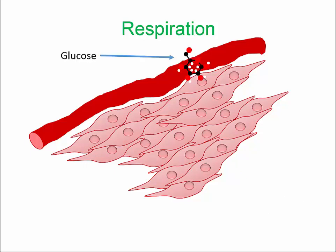Muscle cells require a lot of energy in the form of glucose. Glucose travels around the body in blood vessels and can be taken up by muscle cells.